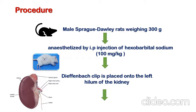Once the animal is anesthetized, find out the location of the kidney and then make an incision at that location so as to expose the kidney. Once you expose the kidney, you can find out the hilum portion of the kidney. In the figure, you can see this is the hilum portion.